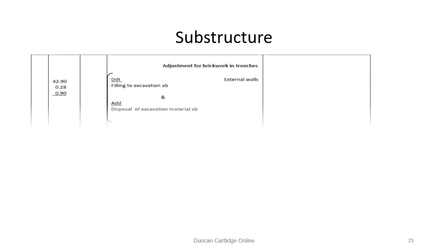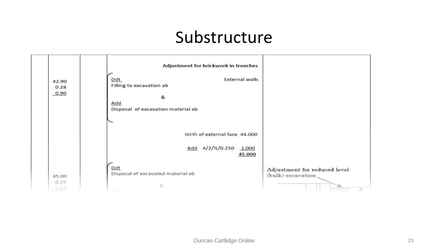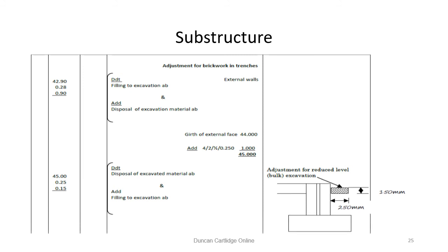We must now make some adjustments to the backfill and removal of spoil. The first item on this page is an adjustment for the masonry in the trench to the filling measured on page 15. In addition, a strip of reduced level excavation measured on page 14 must be reinstated. To do this, the centre line of the strip has to be calculated as shown here.